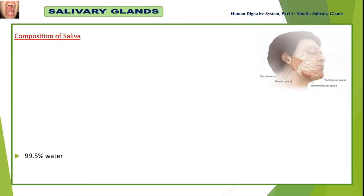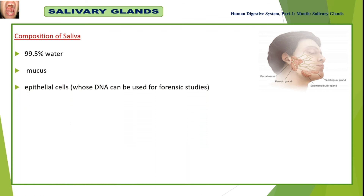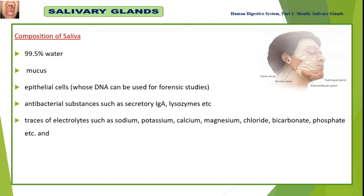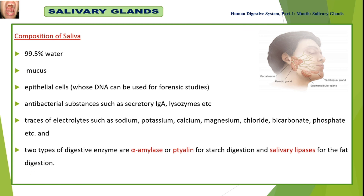Human saliva contains 99.5% water, mucus, epithelial cells whose DNA can be used for forensic studies, antibacterial substances such as secretory IgA and lysozymes, and traces of electrolytes such as sodium, potassium, calcium, magnesium, chloride, bicarbonate, and phosphate. It also contains two types of digestive enzymes: alpha-amylase (ptyalin) for the digestion of starch, and salivary lipase for the digestion of fat.